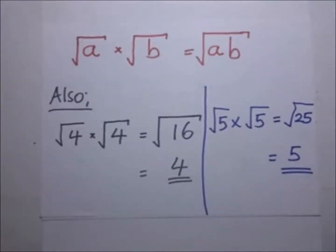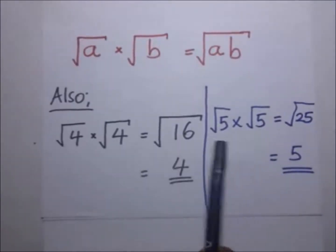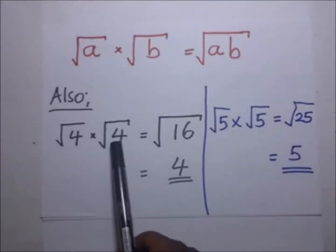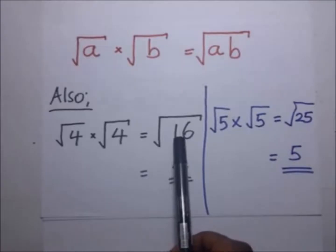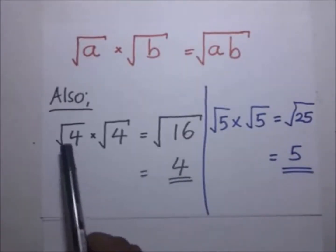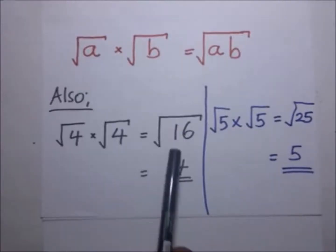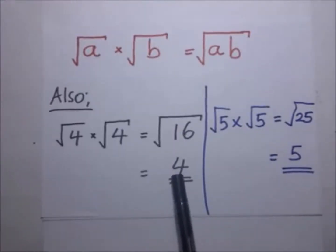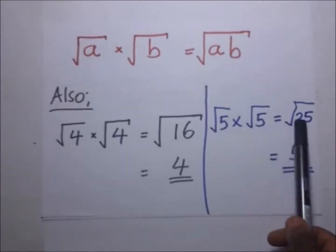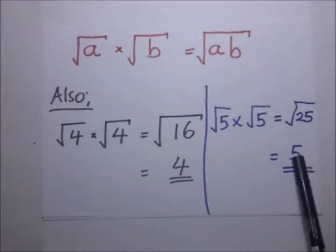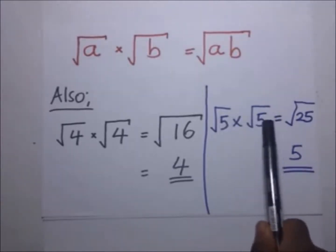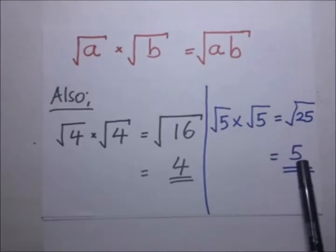We also look at another illustration. The square root of 4 multiplied by the square root of 4 gives us the square root of 16, and the square root of 16 is 4. Likewise, square root of 5 multiplied by square root of 5 gives us the square root of 25, and the square root of 25 is 5. So when we multiplied the square root of the same number twice, we got the same number.